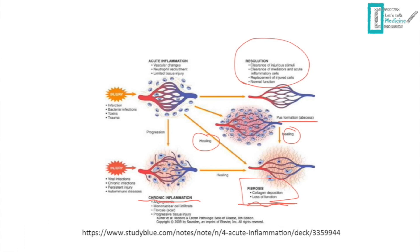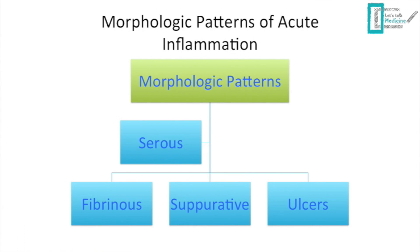Moving from basic pathology to clinical correlations, we now discuss morphological patterns seen in real life: serous inflammation, fibrinous inflammation, suppurative inflammation, and ulcers.